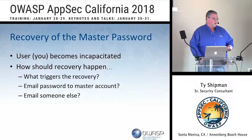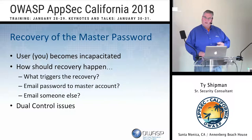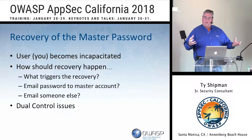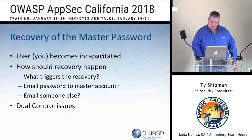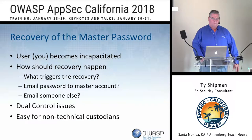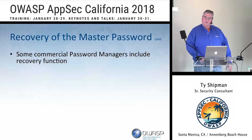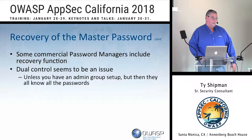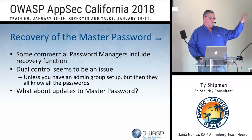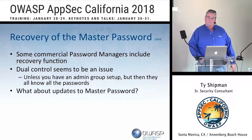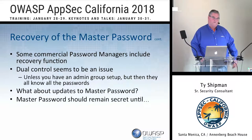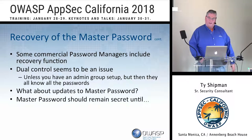How should the recovery happen? And then dual control — sometimes you want your master password split between multiple people. You want to force collusion. Usually collusion implies a bad situation, but in this case you want it. So we'll talk about dual controls and making it easy for non-technical people. Some commercial platforms have password recovery systems in place; dual control seems to be an issue on the ones I reviewed — they don't have a duality requirement, it's just a single person. What about your master password updates? How do you tell your spouse or executor if you change your master password? My master password changes every month. It should remain secret until needed — that's a really good requirement in the recovery process.